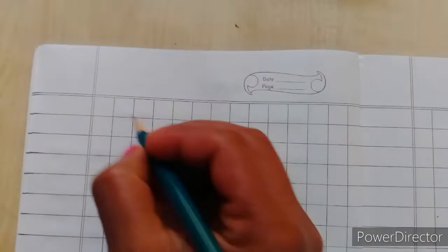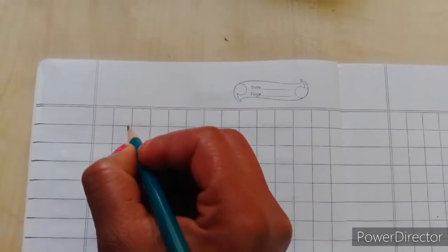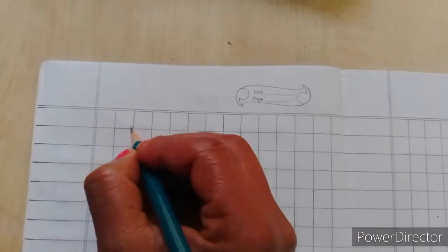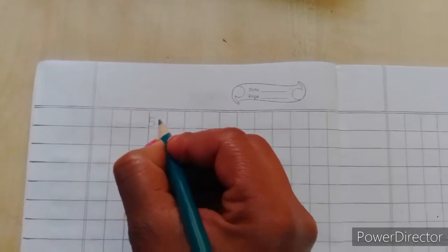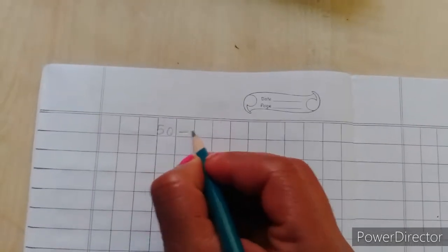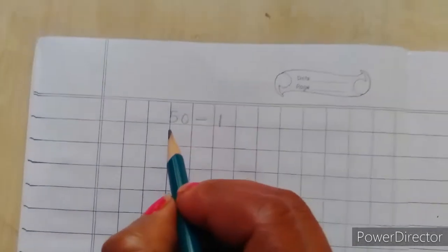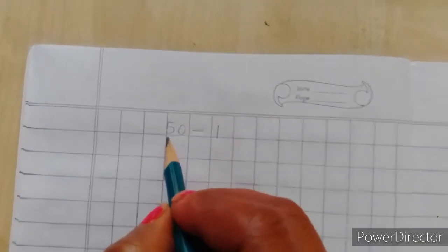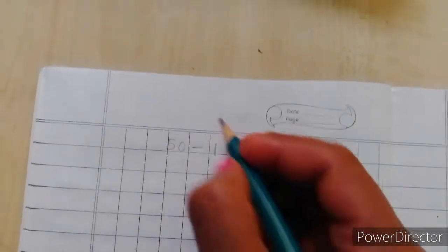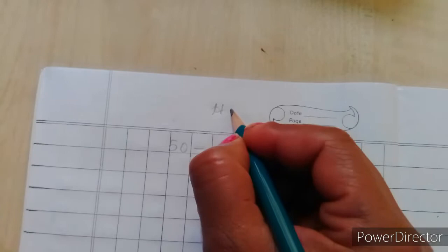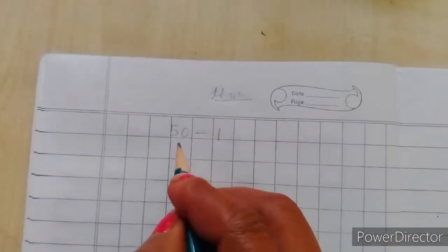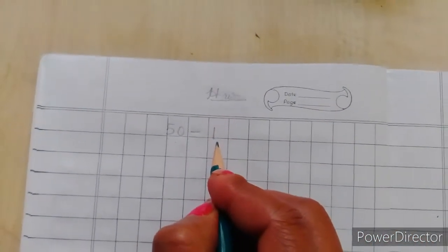Write same homework. The same work you have to do children. And one thing is changed for your homework children. Here you will write the backward counting starting from 50 to 1. Aapko kahan se kahan tak likhani hai backward counting? 50 se 1 tak likhani hai.